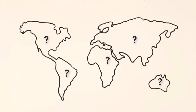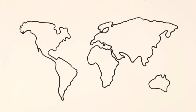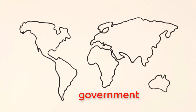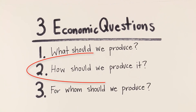The next logical question is: how does each country decide what to produce? In Japan and the United States, consumers and businesses often decide what to produce. In Russia, a government committee makes these decisions. Even in the United States, the government makes some decisions about what to produce and spend money on.